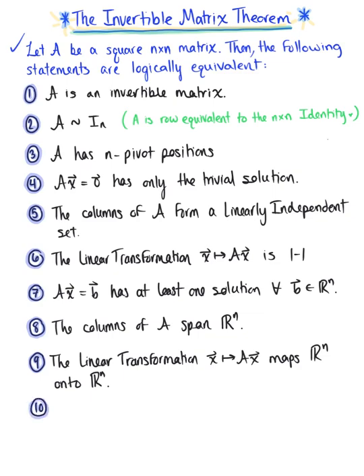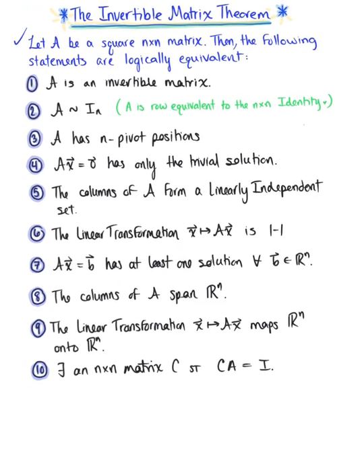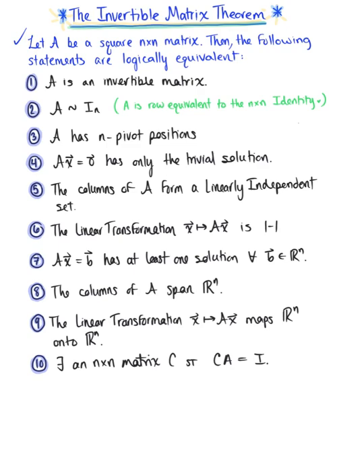These are logically equivalent to saying that there exists an n by n matrix C such that matrix C times matrix A is the identity matrix — that's the left inverse property. Another logically equivalent statement is that there exists an n by n matrix D such that matrix A times matrix D is equal to the identity matrix — the right inverse property.